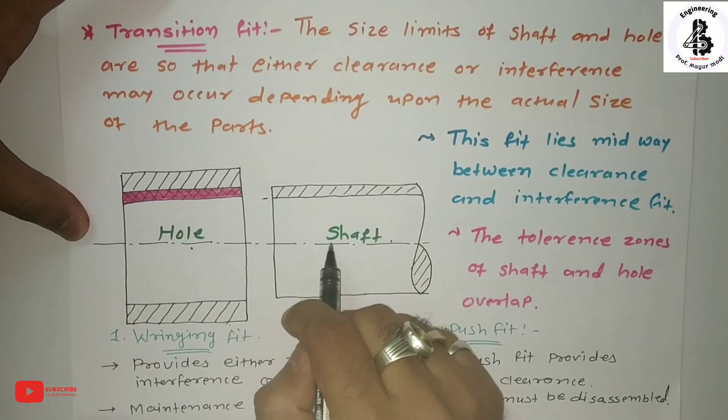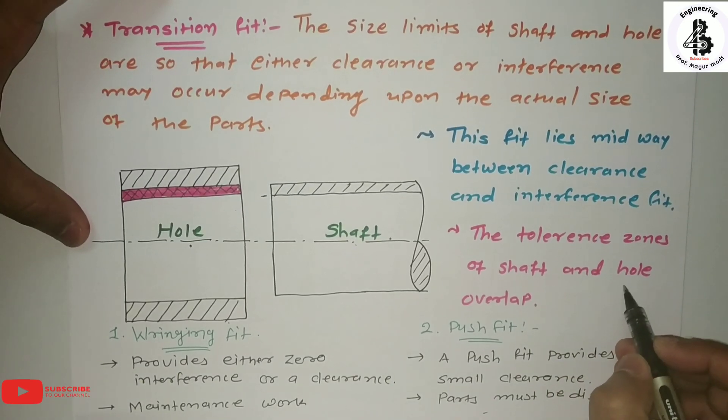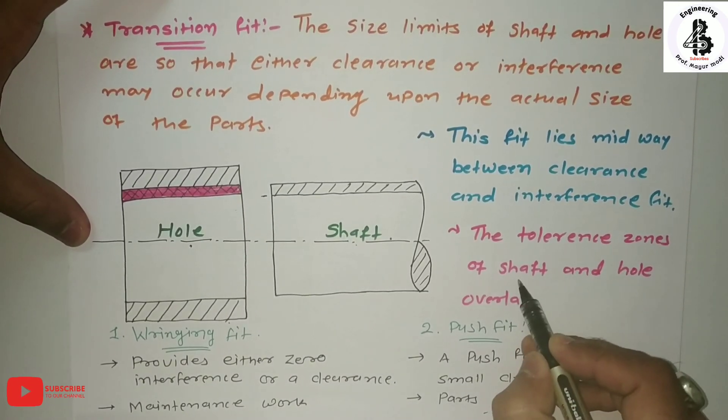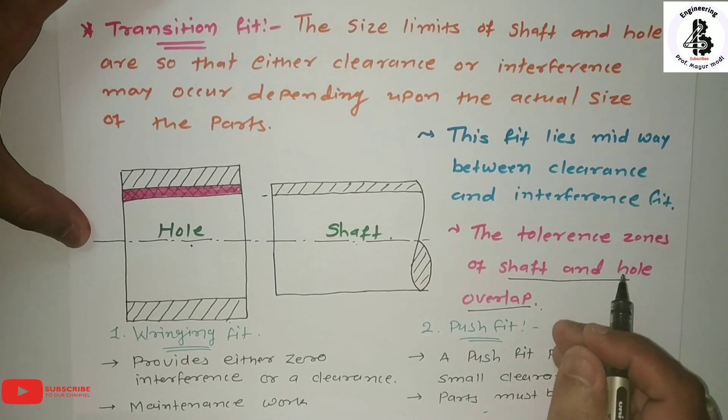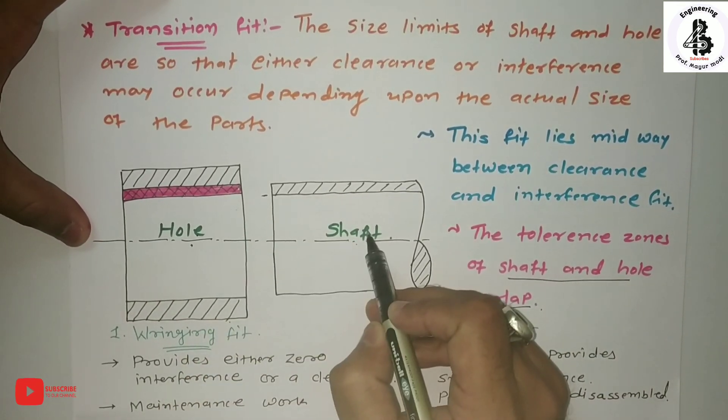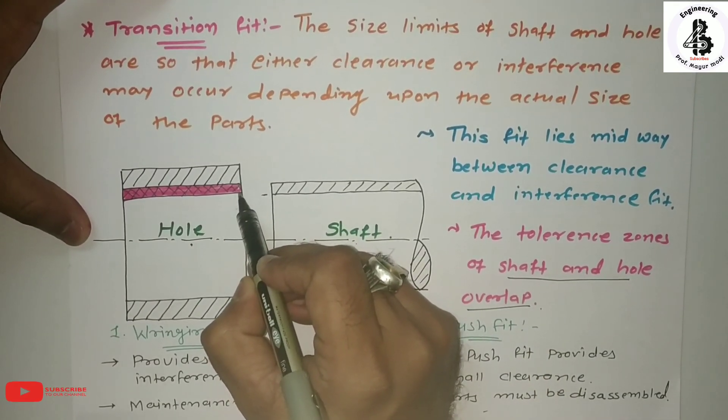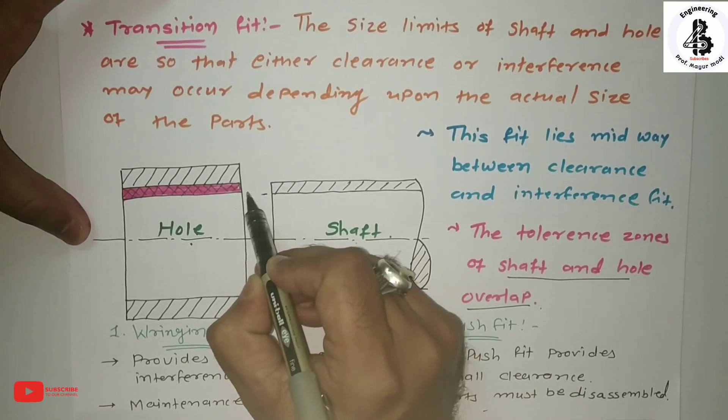The tolerance zones of the shaft and hole overlap. You can see the hole system and the shaft system here. Sometimes, according to that size, it will act with some clearance, or interference will be generated depending on where the shaft dimension falls.